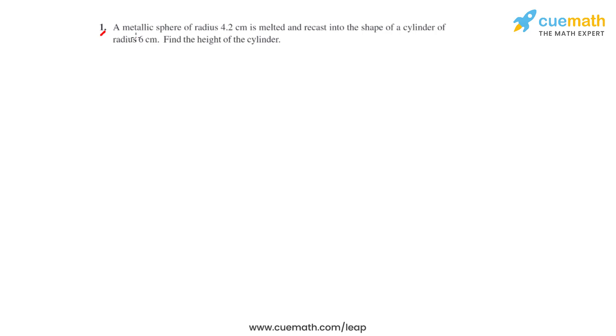Question number one of this exercise says that a metallic sphere of radius 4.2 centimeters is melted and recast into the shape of a cylinder of radius 6 centimeters. We have to find the height of the cylinder.